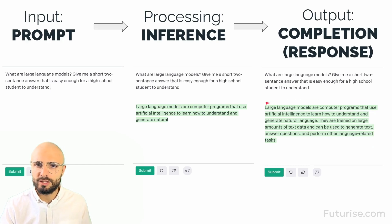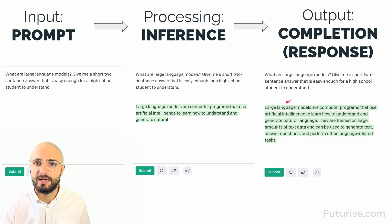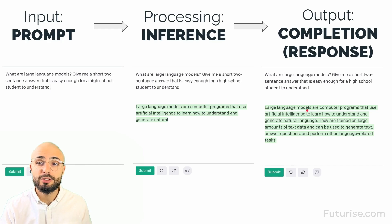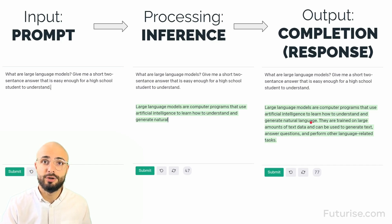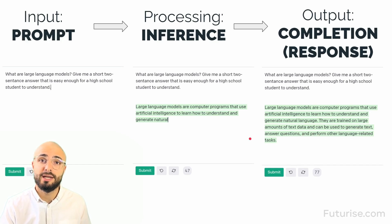Let's have a look at what response it gave us. The question was: 'What are large language models? Give a short two-sentence answer that is easy enough for high school students to understand.' The response it gave us is: 'Large language models are computer programs that use AI to learn how to understand and generate natural language. They are trained on large amounts of text data and can be used to generate text, answer questions, and perform other language-related tasks.'